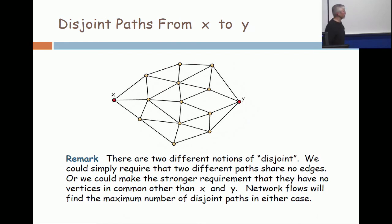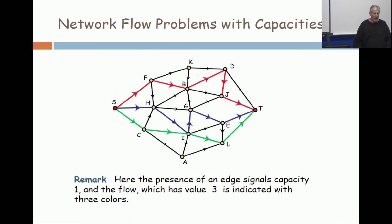It doesn't have any directions on the edges, so I can talk about disjoint paths from x to y. My optimization problem is to find the maximum number of disjoint paths from x to y. But there are two different notions of what it means for paths to be disjoint. One is that they use their own pipes, so in other words the edges are distinct. Now back up one slide. Look at the green path and the blue path. The green path and the blue path, of course, share no edges.